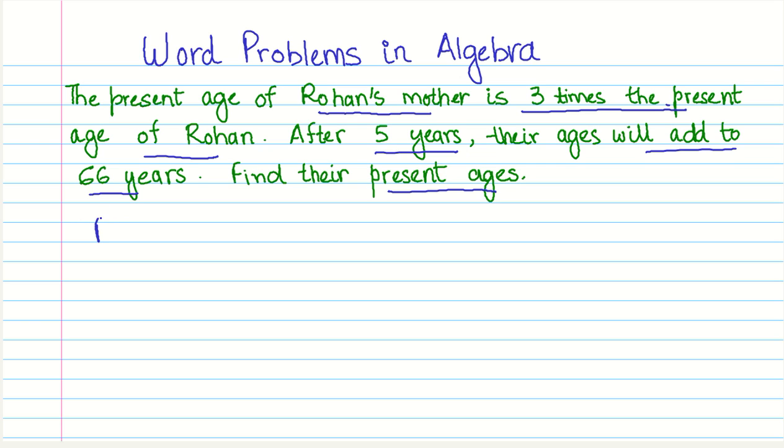And in this case, it will be Rohan's age, Rohan's present age to be x years. Let us say that. And his mother's present age equals three times his age, so 3x years.